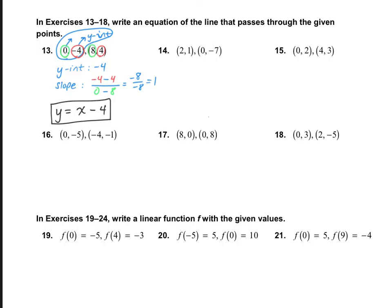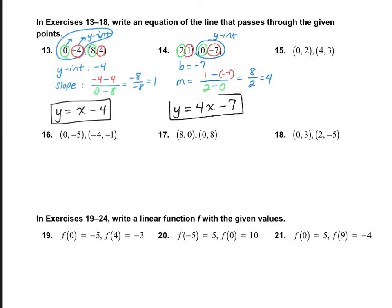Let's take a look at number 14. The y-intercept b is negative 7. Now we find slope m using the slope formula: y numbers on top — 1 and negative 7 — and x numbers on the bottom — 2 and 0. That gives us 1 plus 7, which is 8, over 2 minus 0, which is 2. That simplifies to 4. So the answer is y equals 4x minus 7.